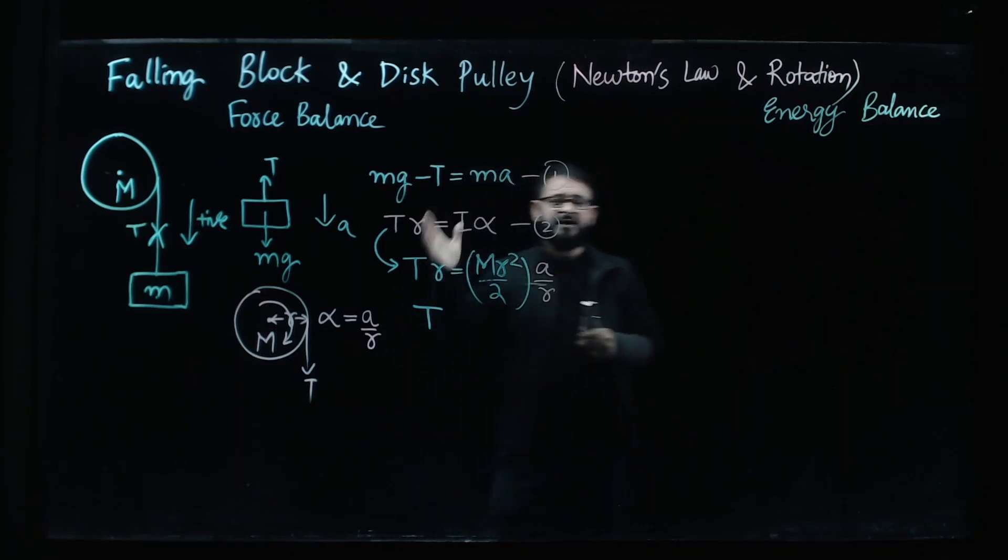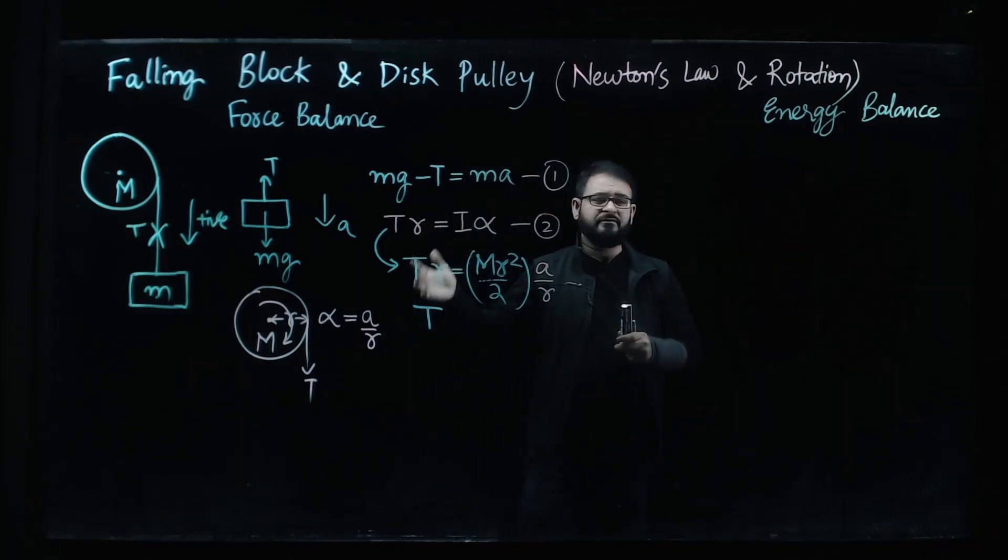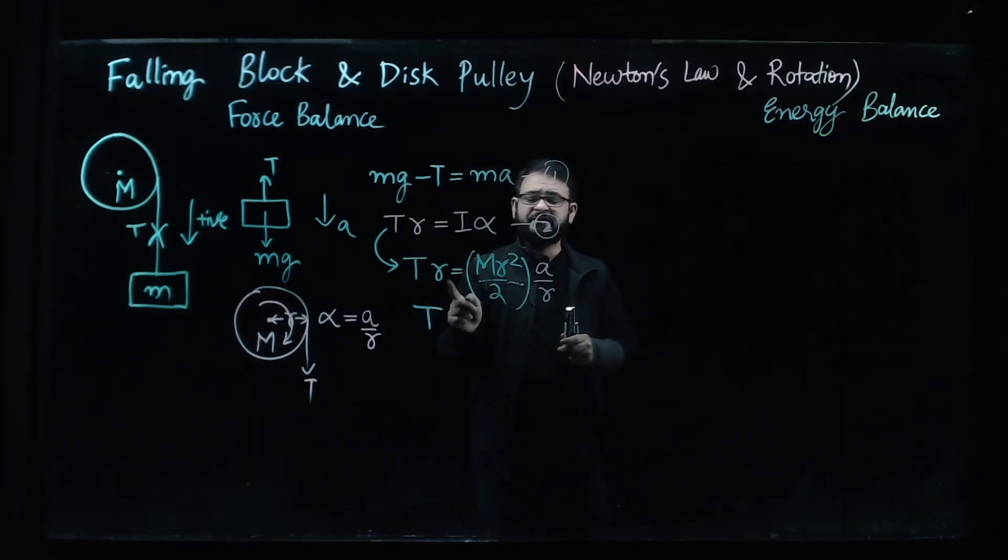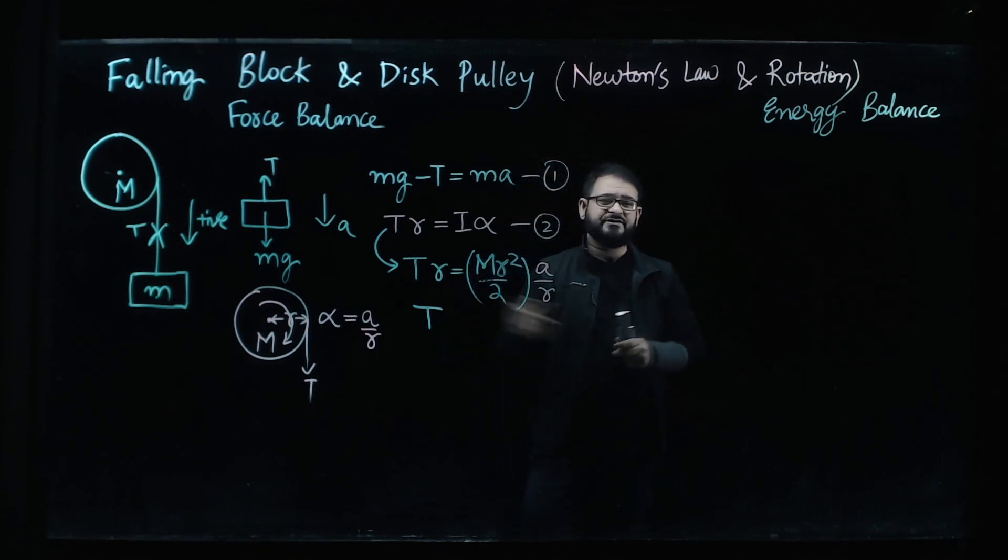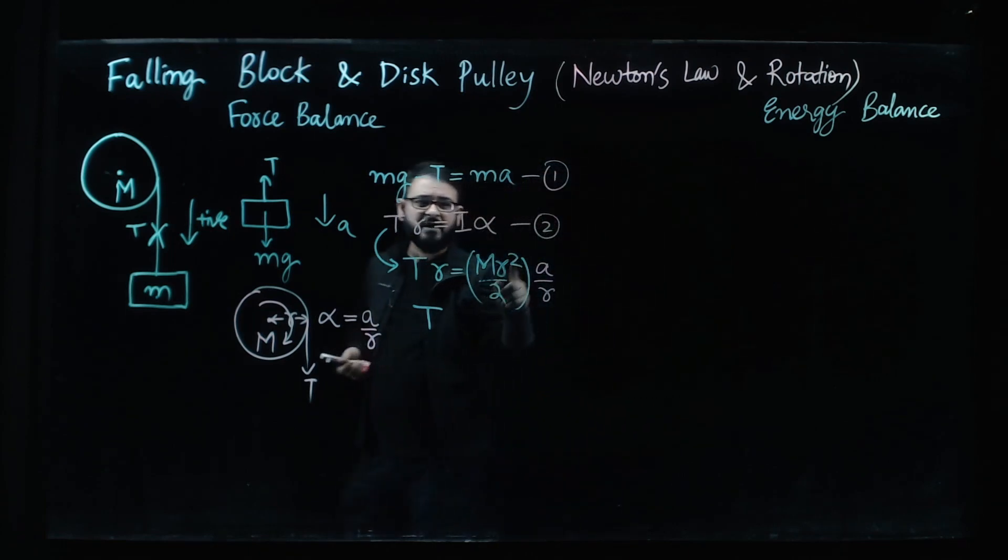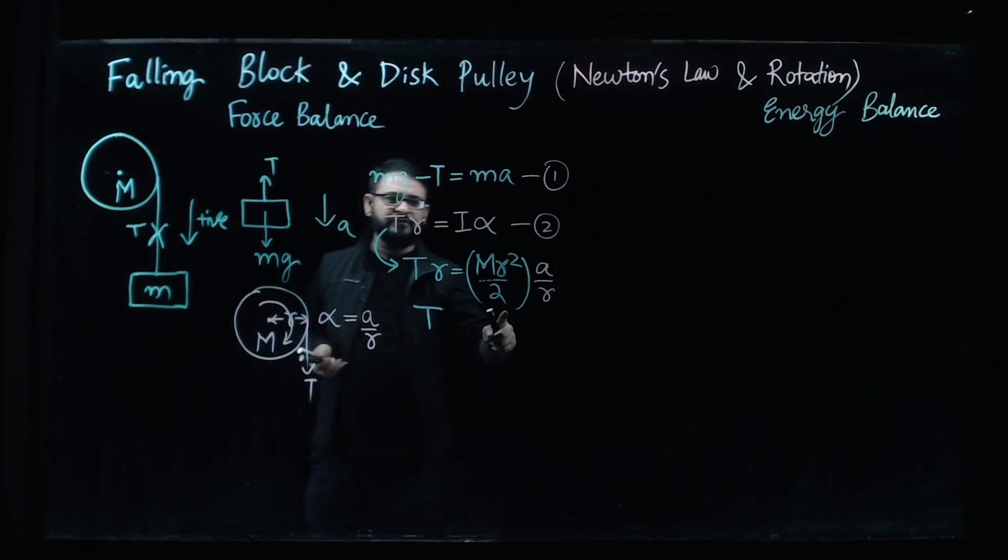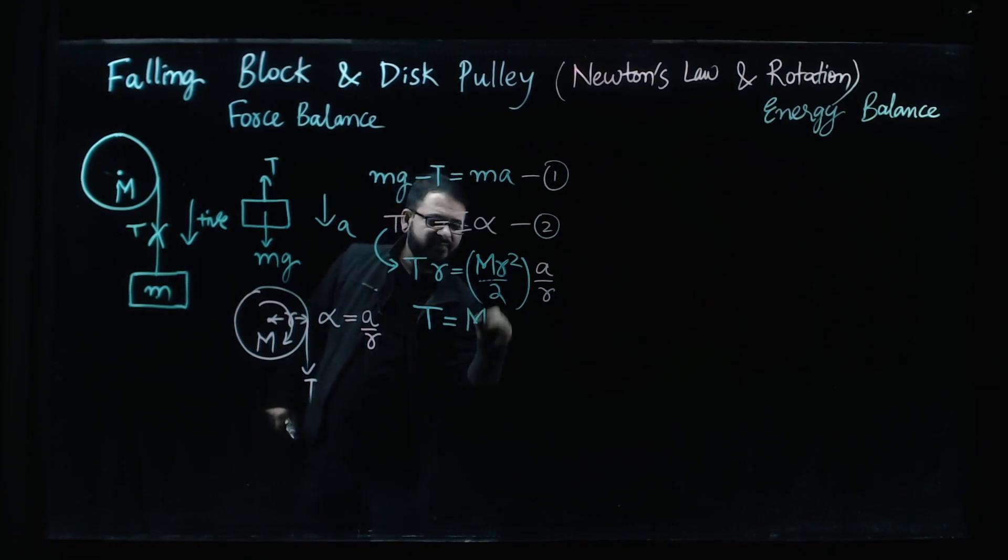So if we rewrite this equation, tension times the perpendicular distance is equal to MR squared by 2, the moment of inertia of the disc, times the alpha. Alpha we can write from here. So here we get our tension as MA by 2.